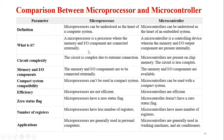Now the last topic is the comparison between microprocessors and microcontrollers. The parameters are listed for both. First is the definition: a microprocessor can be understood as the heart of a computer system, while a microcontroller can be understood as the heart of an embedded system. A microprocessor contains ALU, general purpose registers, stack pointer, program counter, clock timing circuits, and interrupt circuits.